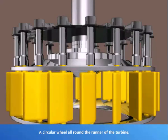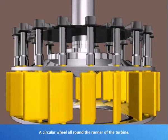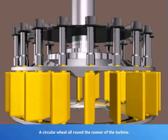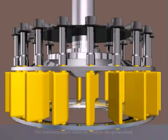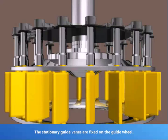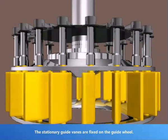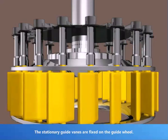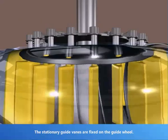A circular wheel all around the runner of the turbine. The stationary guide vanes are fixed on the guide wheel.